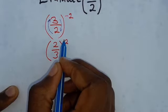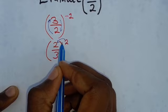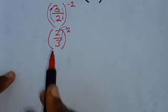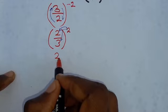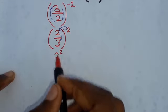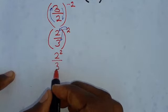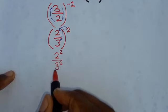Now it's important that you know that this power is for everything that is in the brackets. So this means that you are going to have 2 to the power 2. We are distributing then over 3 to the power 2 like this.